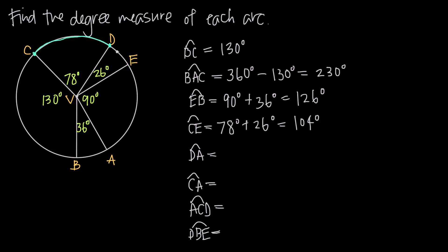Arc DA is another minor arc. We start at D and come around to A. We know we're going this way because with two letters it's a minor arc, and going the other way would be greater than 180 degrees. So from D to A is 26 degrees plus 90 degrees, which gives us 116 degrees.